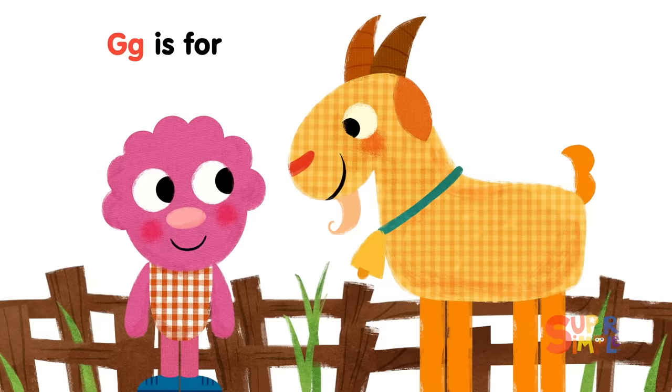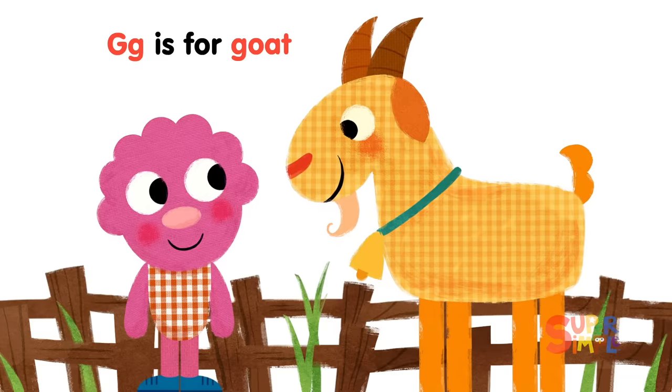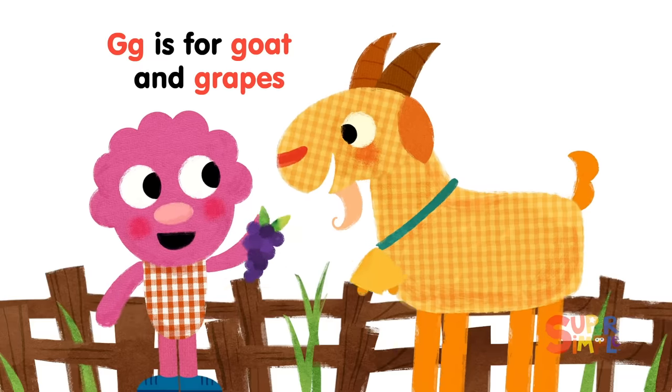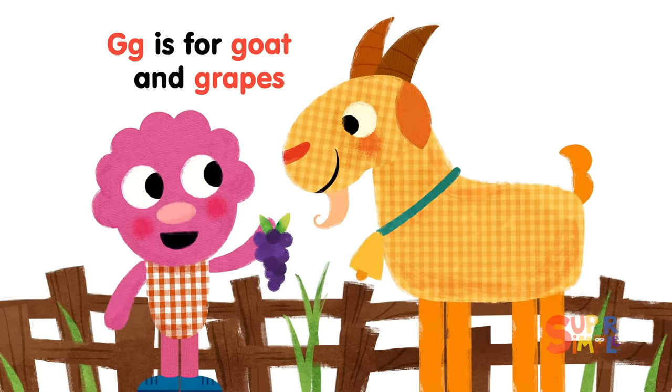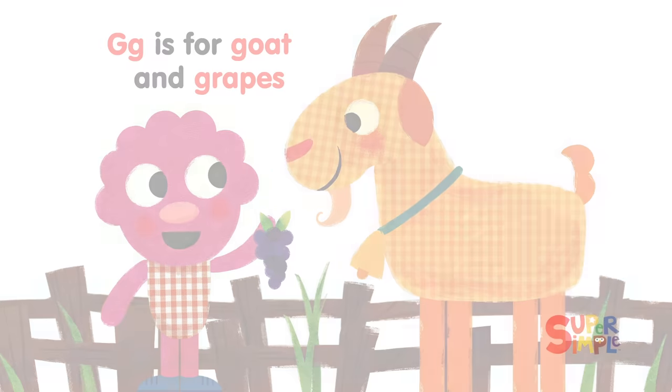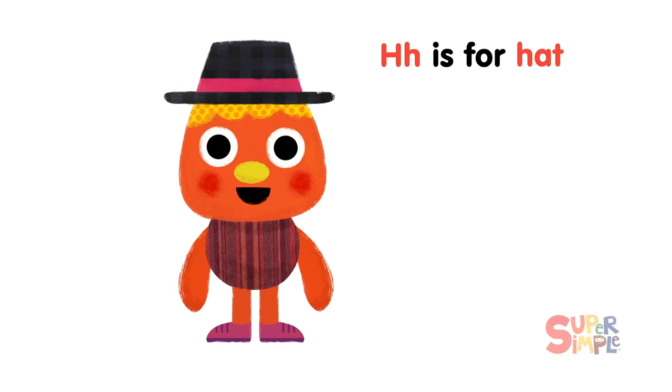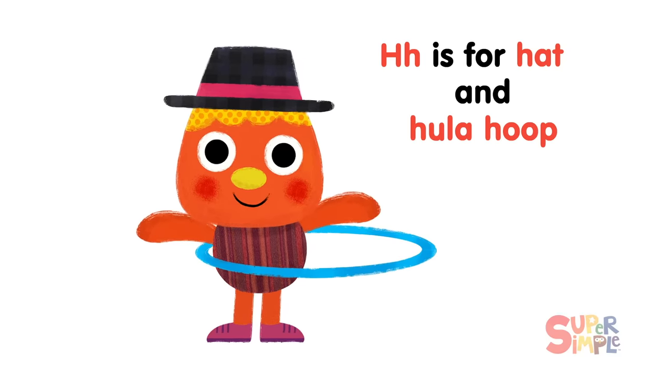G is for Goat and Grapes. H is for Hat and Hula Hoop.